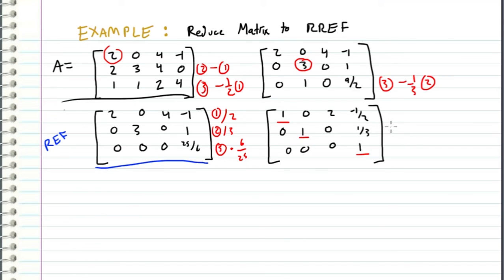And we can take the second row and we can subtract 1 third times this third row, and then we can take the first row and add 1 half times the third row.